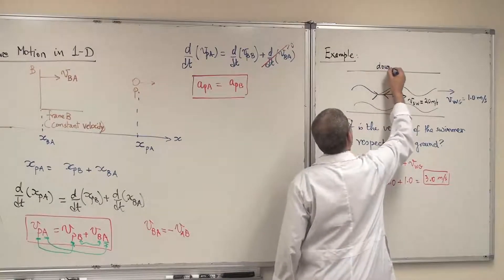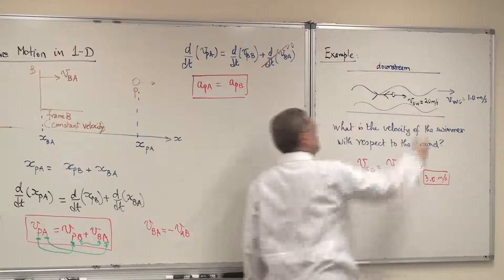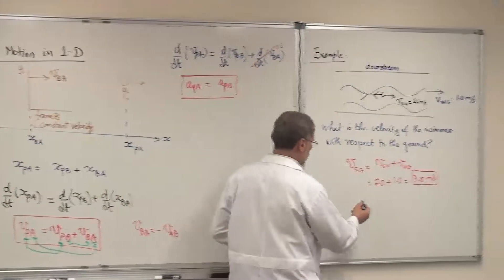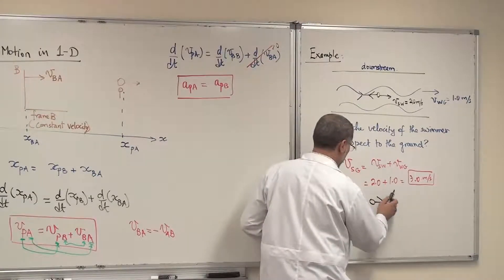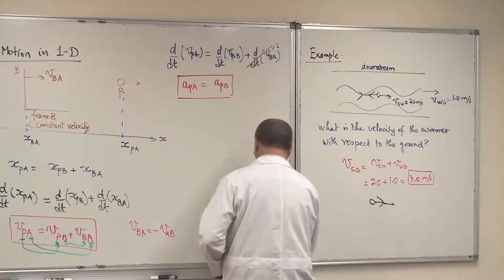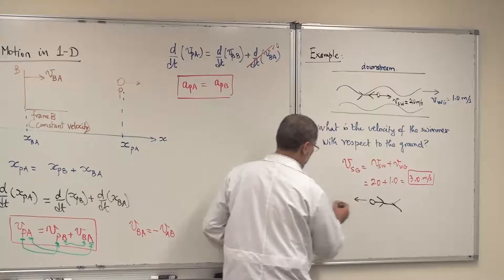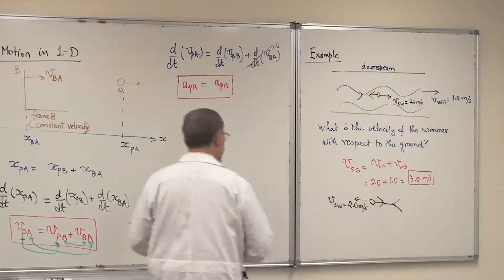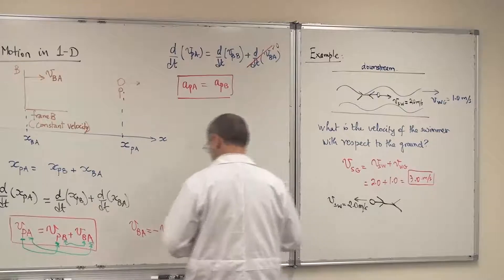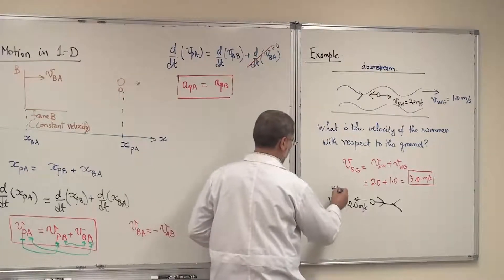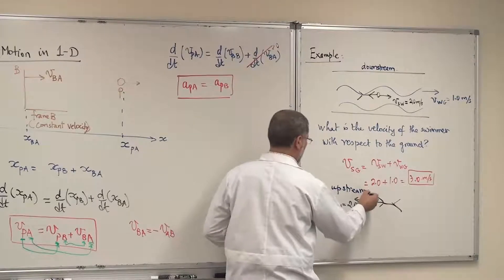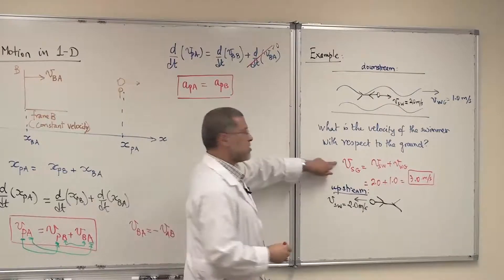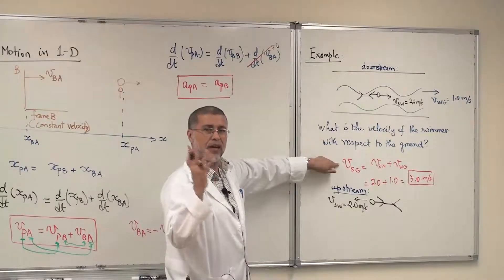This motion of the swimmer is called downstream — the swimmer is moving in the same direction as the water. Now let's look at the case when the swimmer is moving upstream, swimming against the flow of the water, with the same speed of two meters per second. Let's calculate the velocity of the swimmer with respect to the ground in this upstream case using the same equation — what changes are the signs.